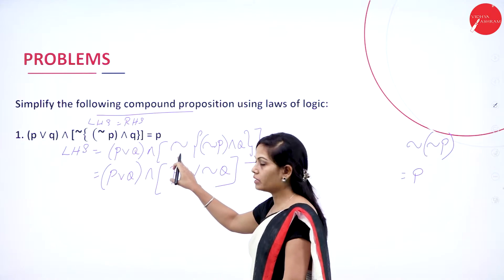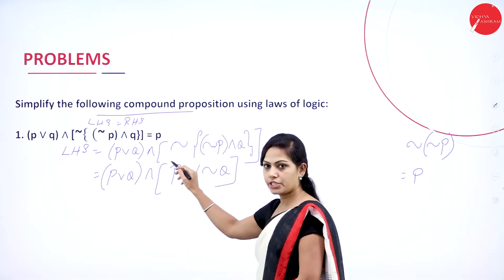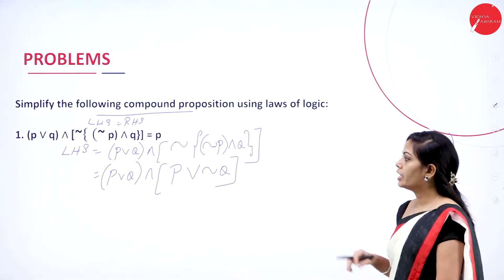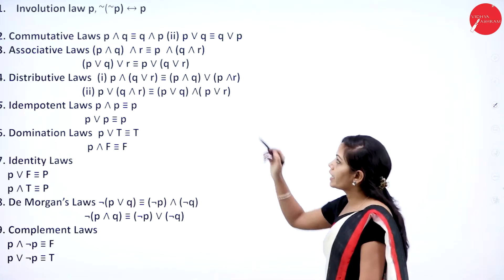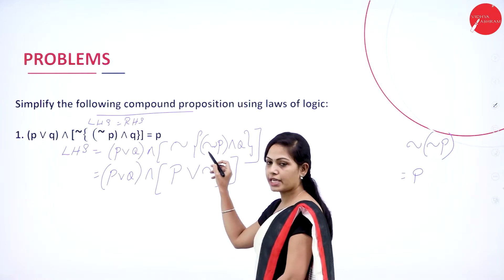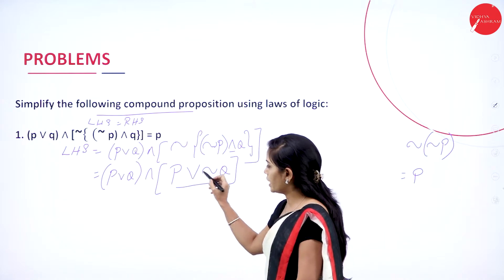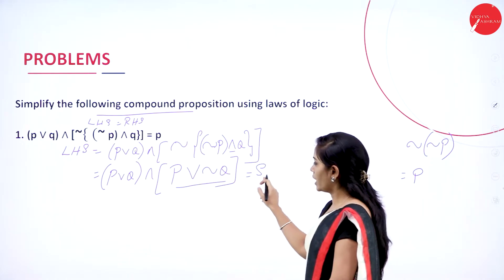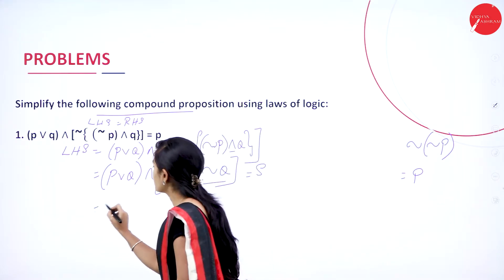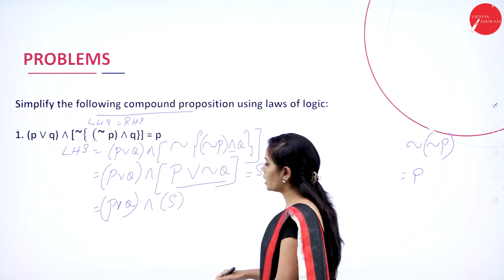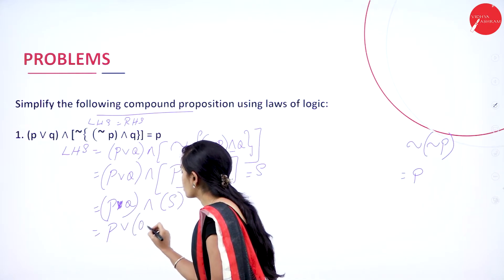I have negation inside the flower bracket with negation P and Q. Removing the flower bracket, I multiply negation to negation P — by the involution law, negation of negation P equals P — so the symbol changes to OR and negation Q. I will take this statement P ∧ ¬Q as S. So S = P ∧ ¬Q. In place of that expression, I write S. Now I have P ∨ Q ∧ S.